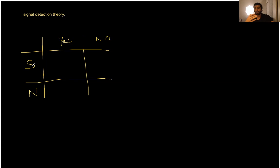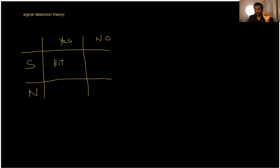If you are participating in a hearing research study and they give you a headphone and play you some tones, asking you to hit a button whenever you hear a signal or frequency — if you heard that signal and you say yes, this is going to be called a hit. There was a signal and you were able to correctly judge it. But if there is a signal and you accidentally say no, or you don't hear a signal but they're actually playing one, that is going to be a miss. So there is a signal, but you said no — you miss the signal.